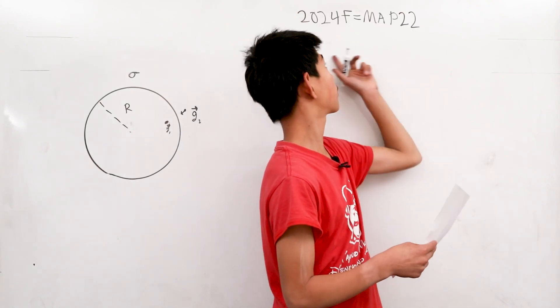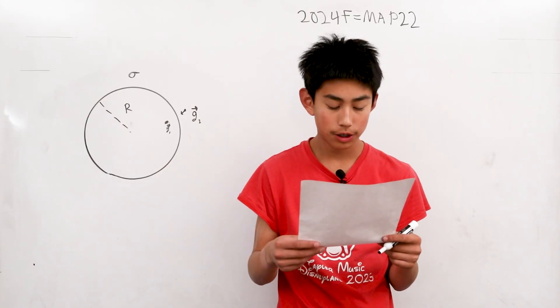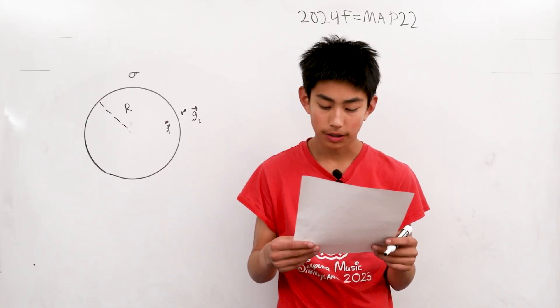We're solving problem 22 from 2024 F equals MA exam. A spherical shell is made from a thin sheet of metal with a mass per area of sigma.